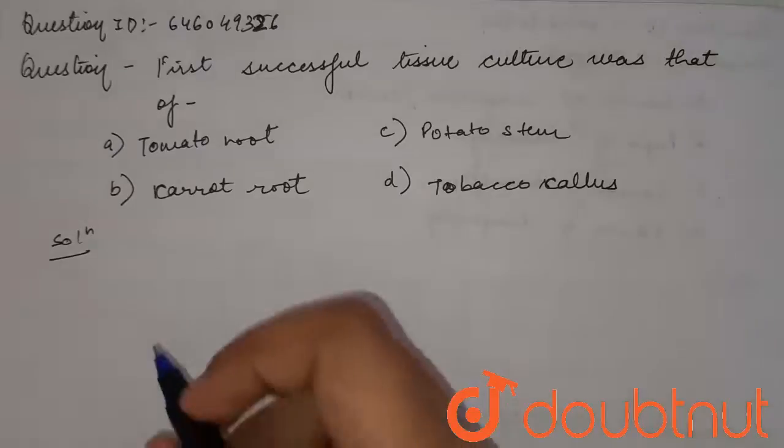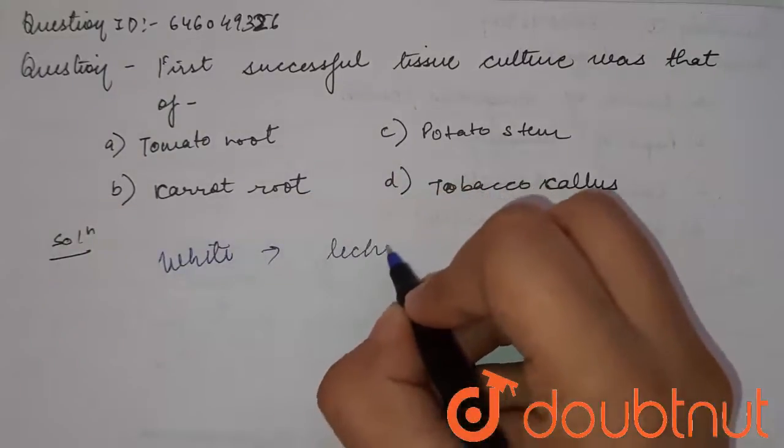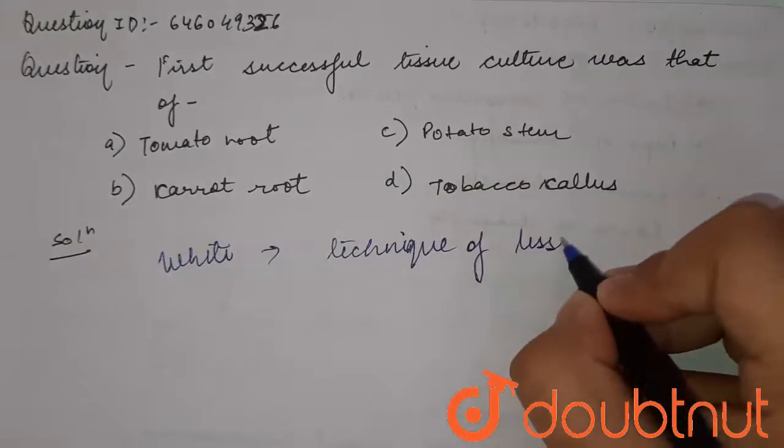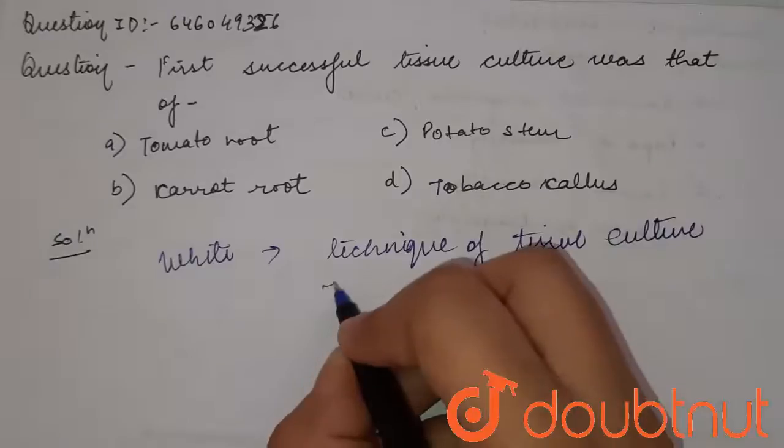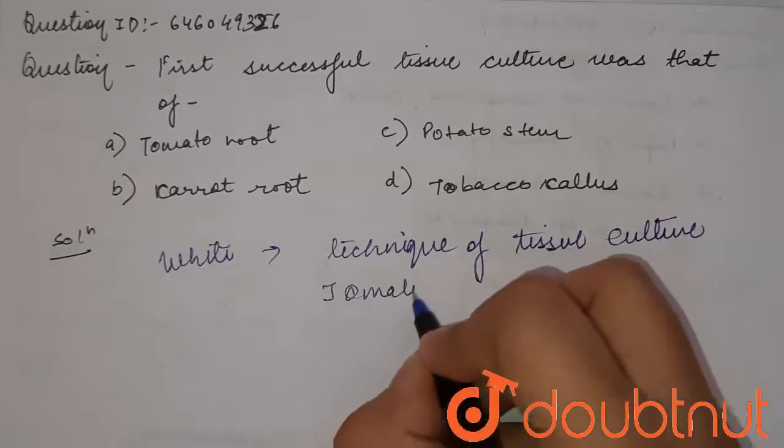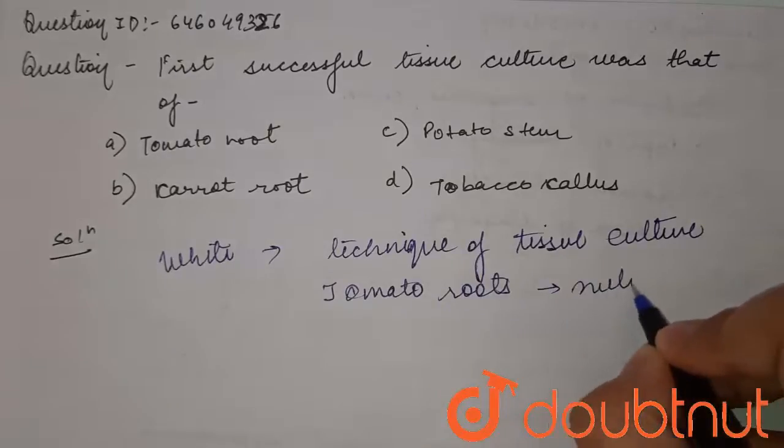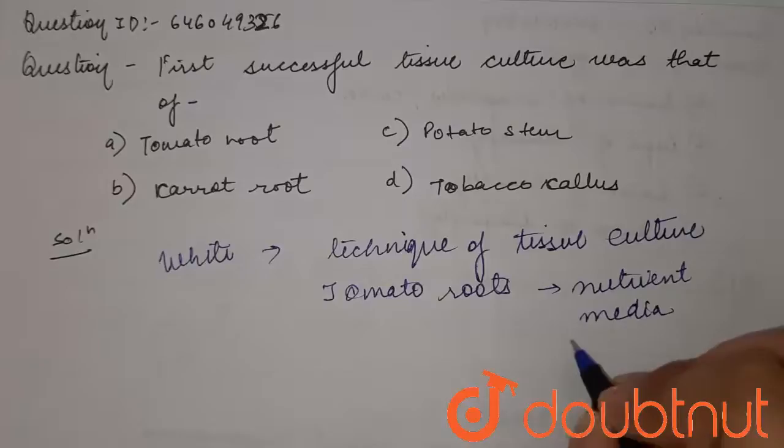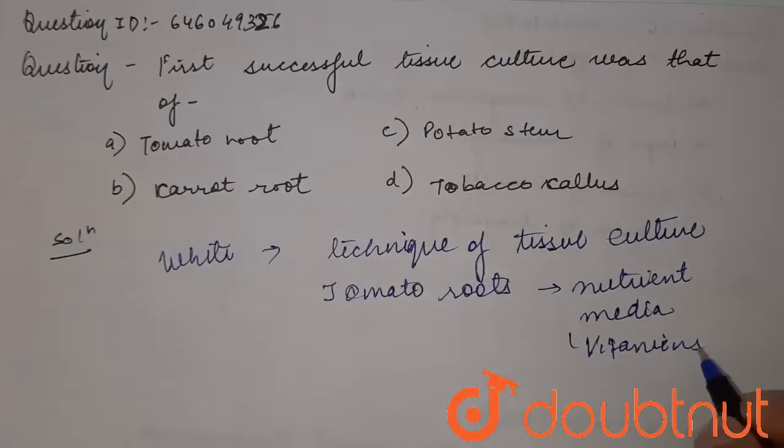The scientist White was the first one to successfully attempt the technique of tissue culture. He experimented on the tomato roots and put them in a nutrient medium composed of vitamins. He developed a continuously growing callus.